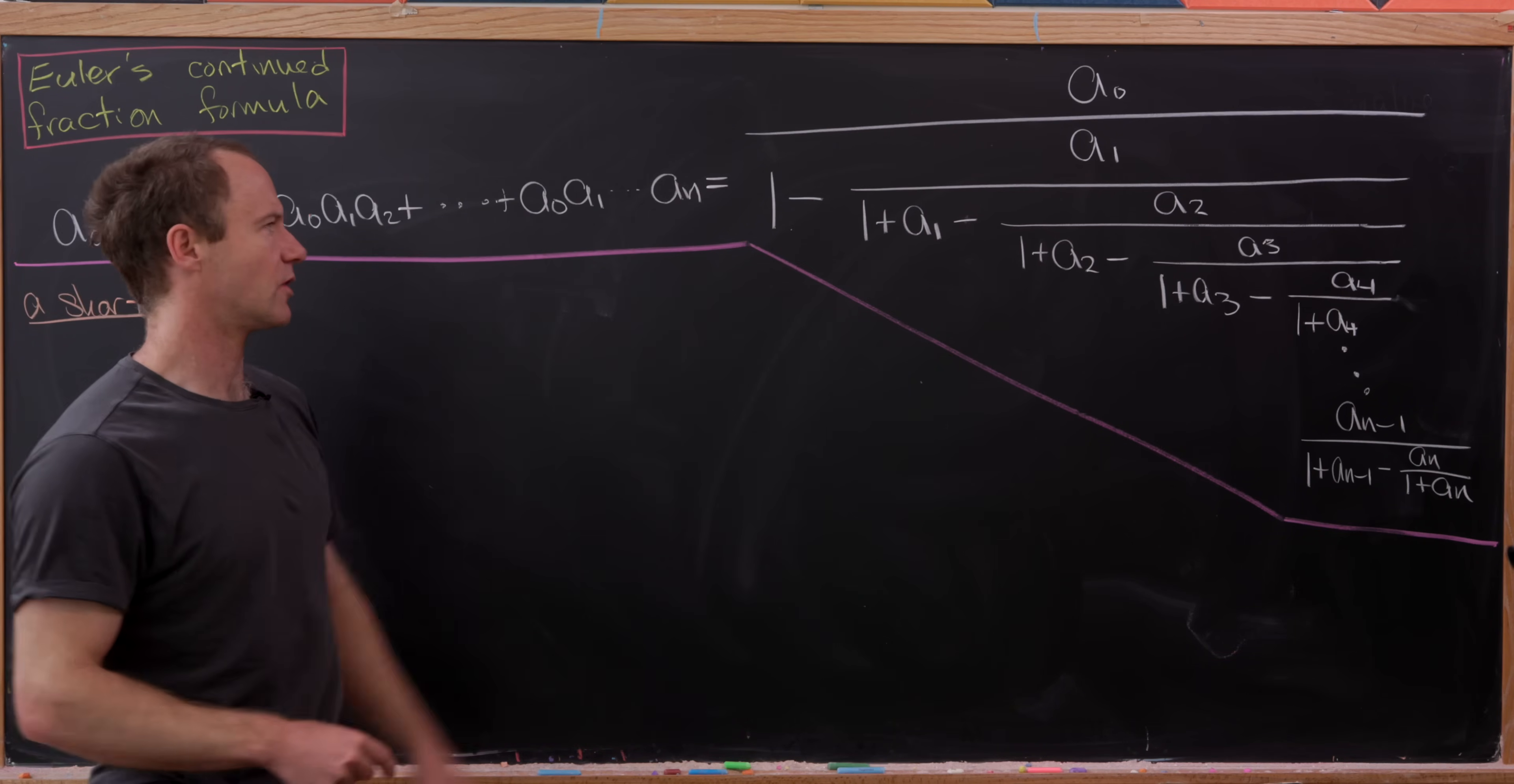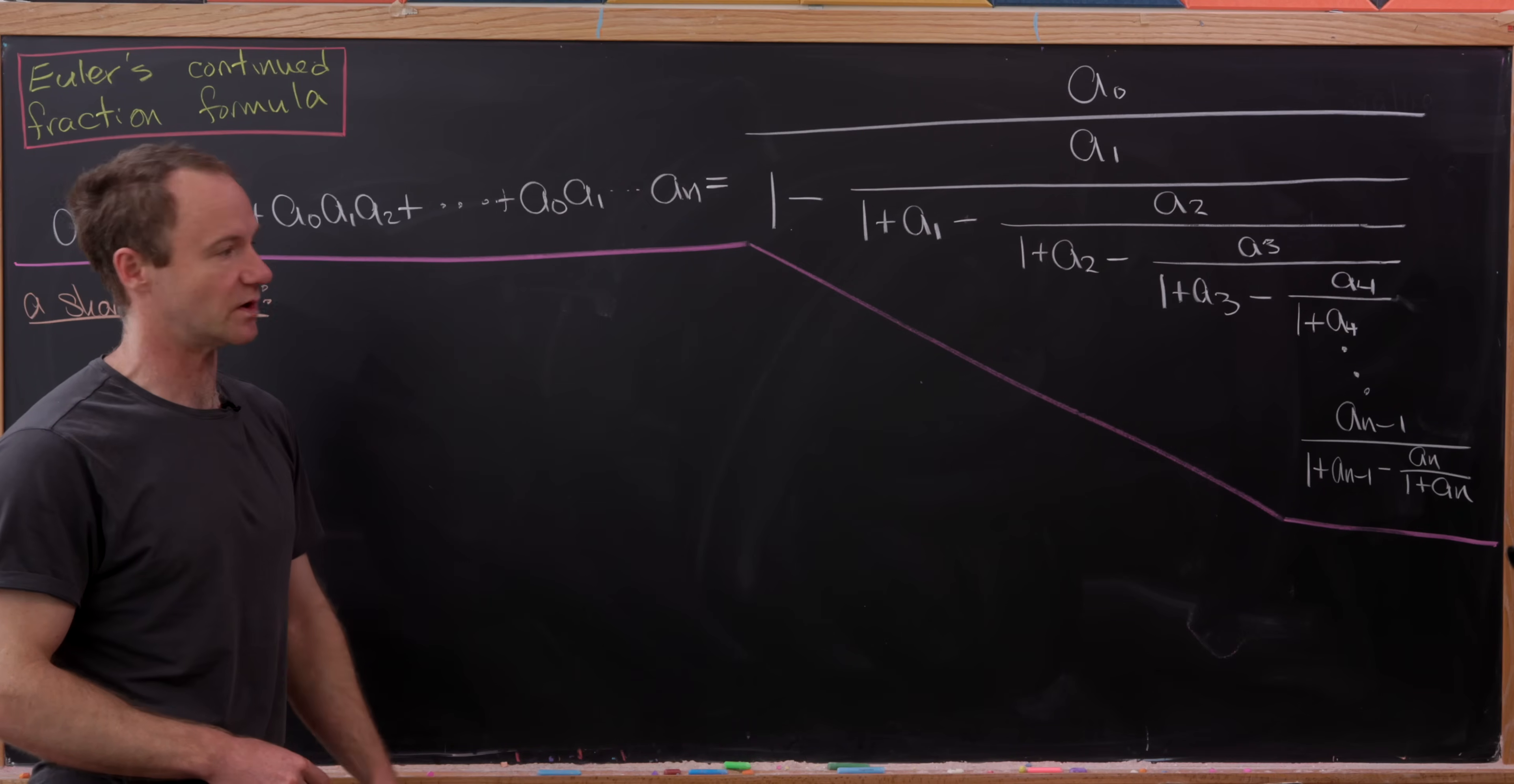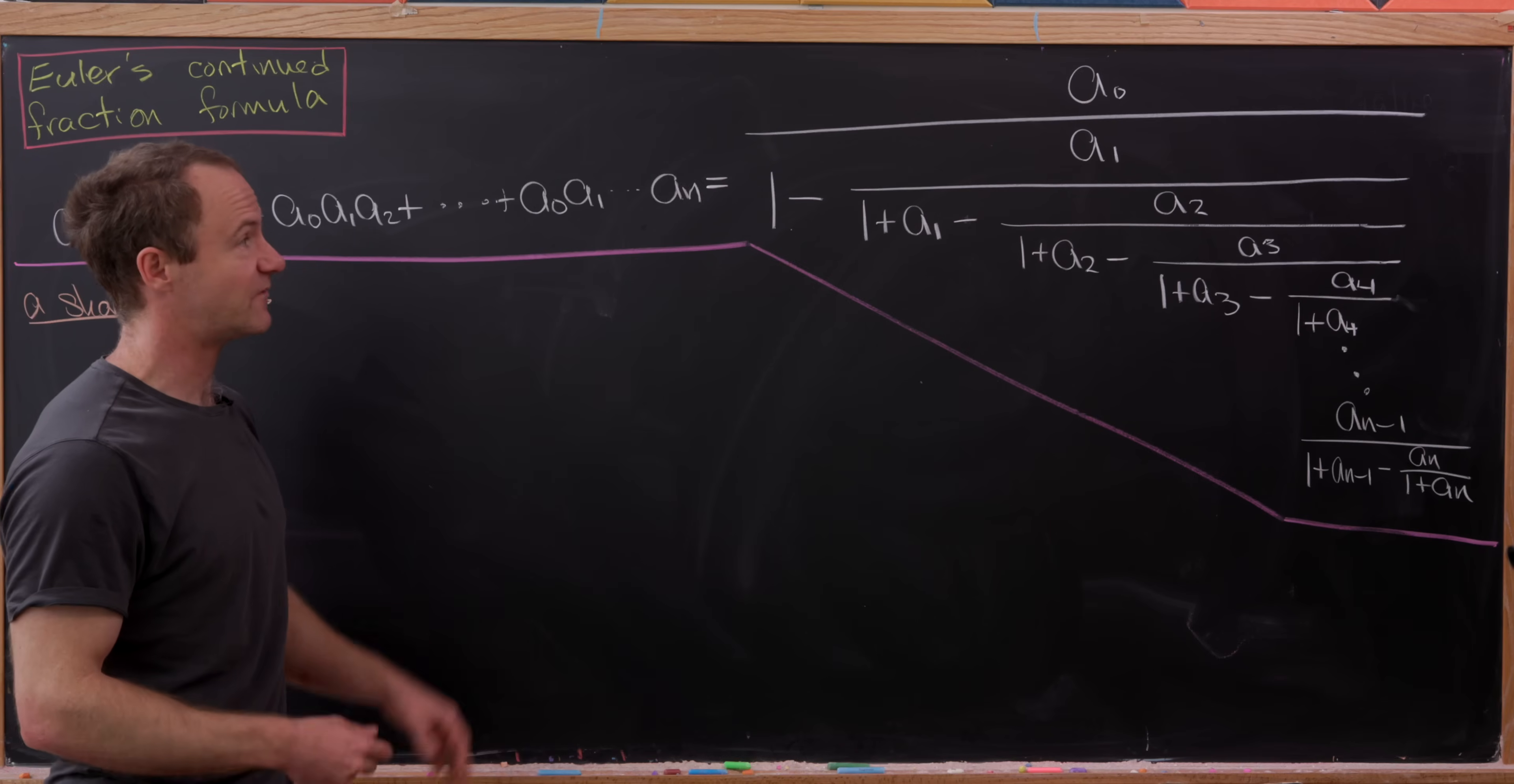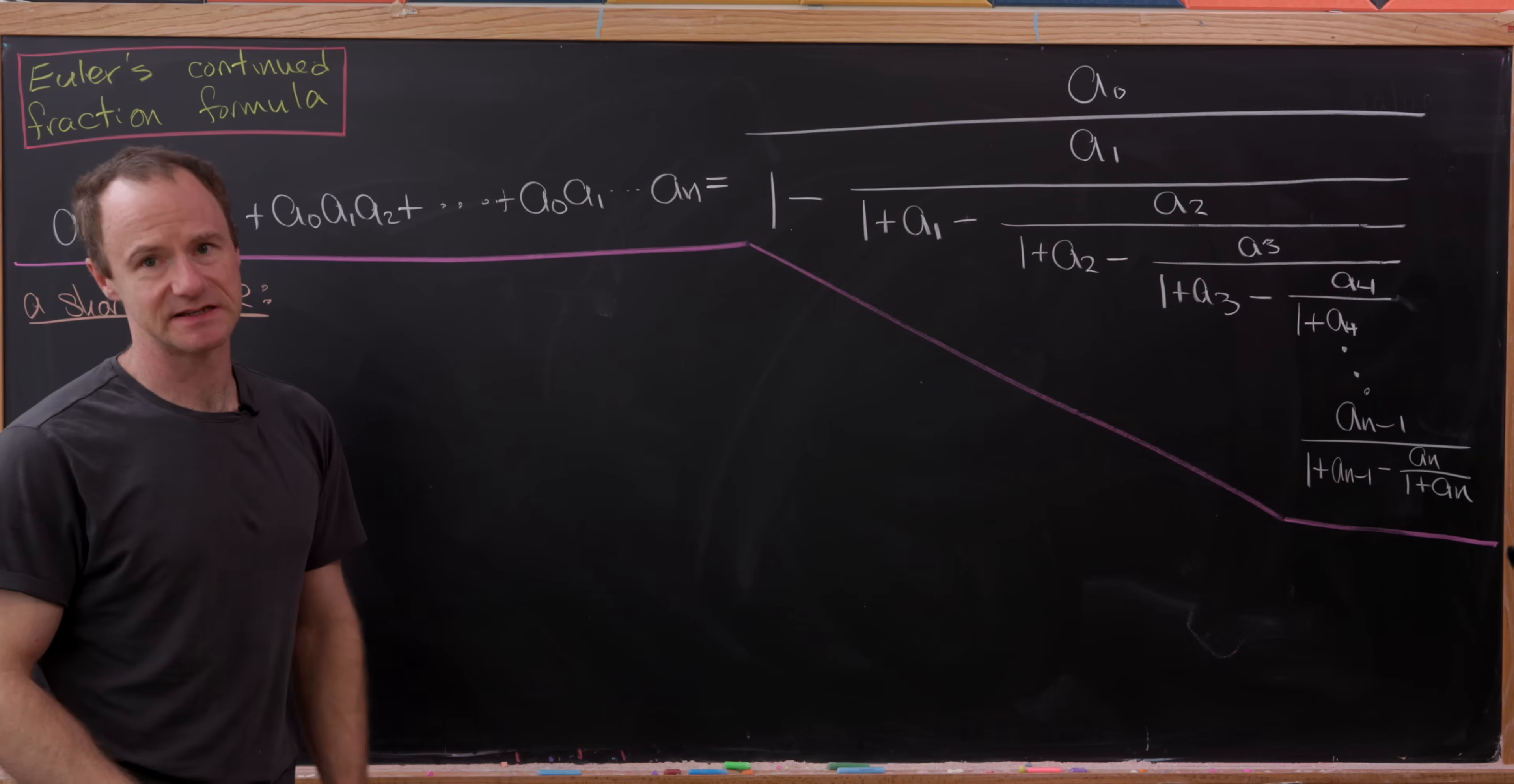times a1 all the way up to an. So here we've got a product of n plus 1 terms. So that can be expressed as the following continued fraction. And it's a finite continued fraction.